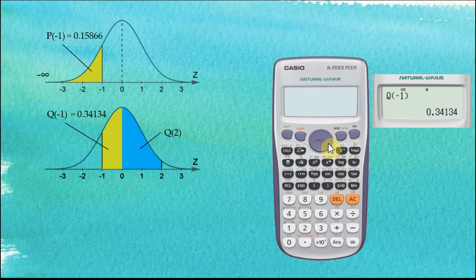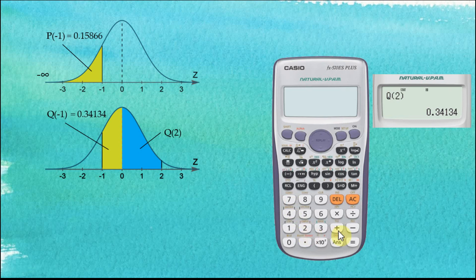We can use the right arrow key to move the cursor into the bracket and change the negative 1 to 2. Delete the old value, replace it with 2, and press equal. The answer is 0.47725. So Q(2) — the area from 2 to 0 — is 0.47725. Using Q always means the area from a certain number to 0.